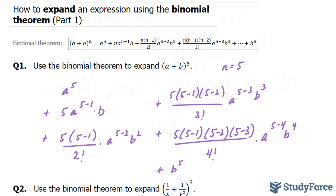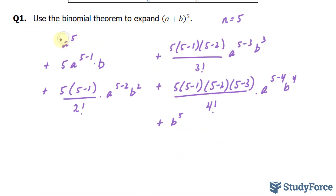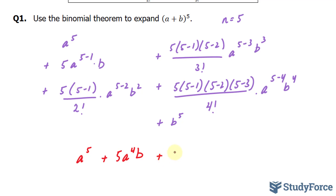Now I will simplify wherever I can. Starting with our very first term, we had a to the power of five — that remains as is. Then we had five times a to the power of four b, so I write down plus five a to the power of four b. To simplify the next term, five times four divided by two factorial: five times four is 20, divided by two is 10. So plus 10 a to the power of three, b to the power of two.